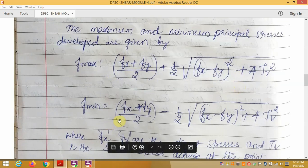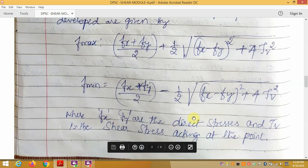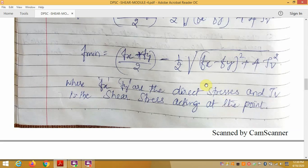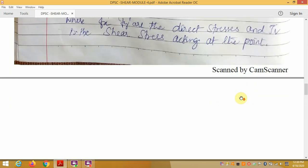Similarly, F minimum equals Fx plus Fy divided by 2 minus half into root of Fx minus Fy the whole square plus 4 into Tau V square, where Fx and Fy are the direct stresses and Tau V is the shear stress acting at that point.